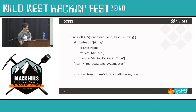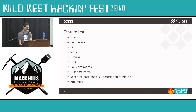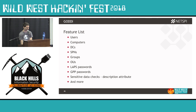This is an example of dumping LAPS passwords in Go — we're only specifying the attributes we need: DNS host name and the two key LAPS attributes. The filter uses object category because it's indexed. The feature list includes users, computers, DCs — really everything that PowerView does. Three things I found particularly interesting are: LAPS passwords, GPP passwords, and sensitive data checks. For that last one, we're using simple keyword discovery looking in the description attribute — that gets flagged and dumped in a separate CSV.